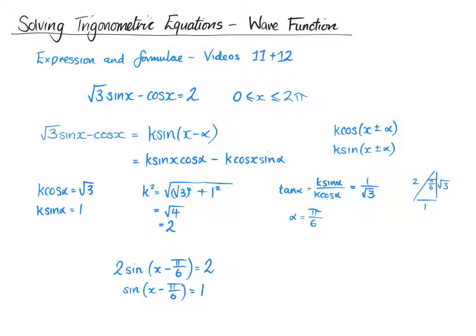Okay, so then if we think about it, sin is equal to 1 at 90 degrees, which is pi over 2. So that gives us x minus pi over 6 is equal to pi over 2. So therefore, x is equal to pi over 2 plus pi over 6.